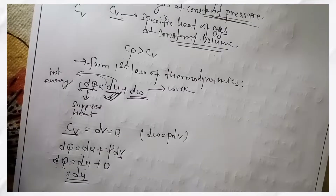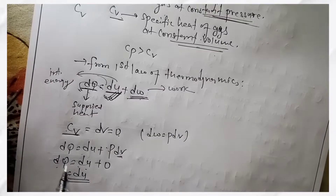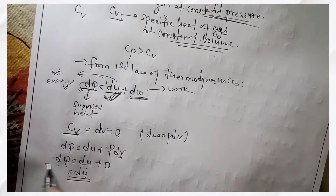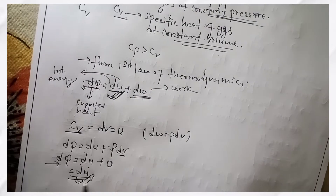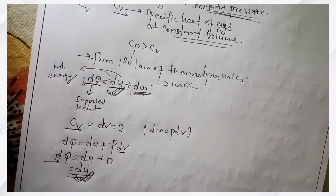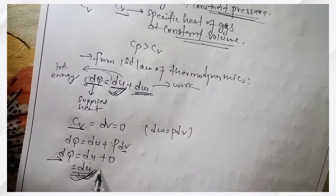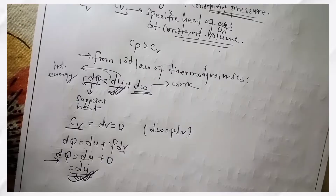So, the amount of heat supplied to the system at constant volume increases the internal energy, which increases the temperature. The entire amount of heat supplied goes to increasing temperature.